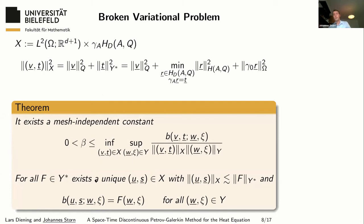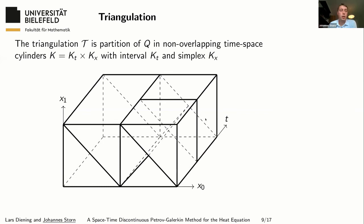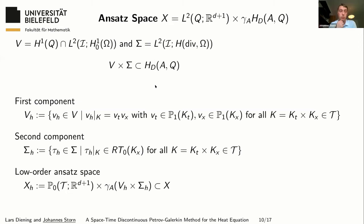Now that we have a well-posed variational problem, we can start to discretize it and therefore introduce the triangulation. So far the triangulation was just an arbitrary partition of the time-space cylinder. Now I add some additional assumptions: I want a partition into non-overlapping time-space cylinders of the form time interval times simplex, allowing for local refinement in time and in space. With this triangulation, I am able to define my discrete ansatz space, which consists of an L2 contribution and the trace of the space H_D(A,Q).